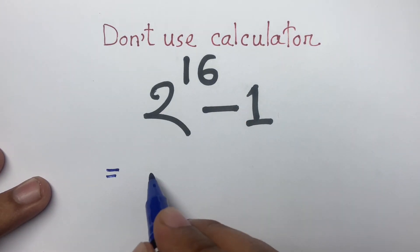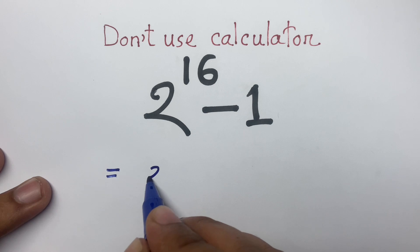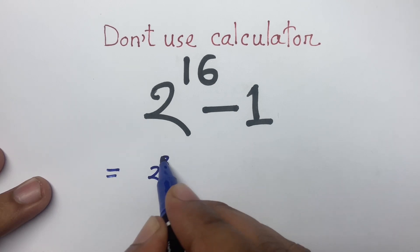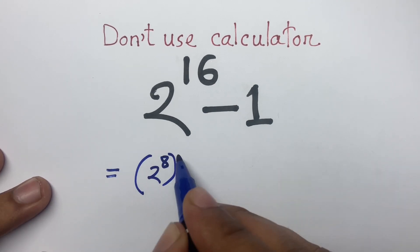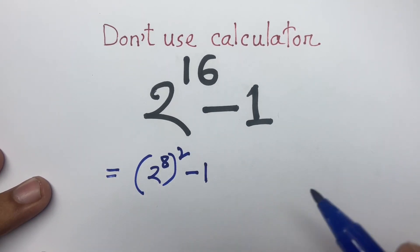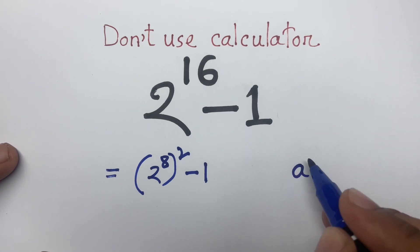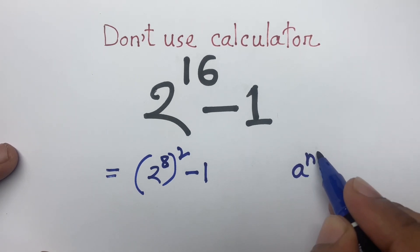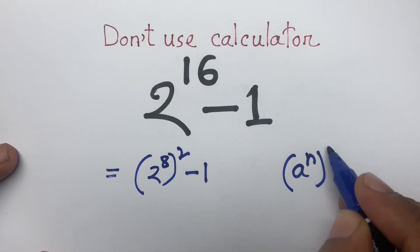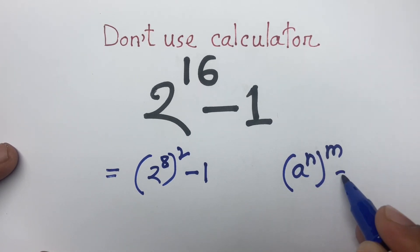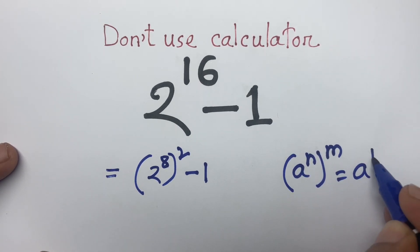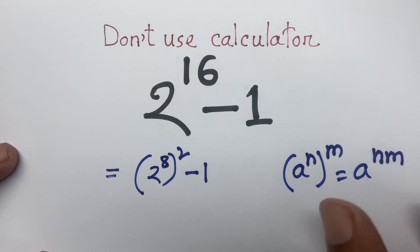I can say easily 2 to the power 8, squared, minus 1. We know that a to the power n, to the power m, equals a to the power n times m. I follow this exponential rule.